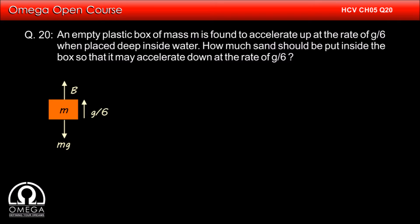The acceleration of the box is g by 6 in upward direction. The net force in vertically upward direction must be equal to mass into acceleration. Therefore, b minus mg must be equal to mg by 6, or b is equal to mg plus mg by 6, or b is equal to 7mg by 6.